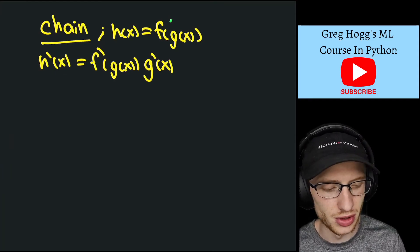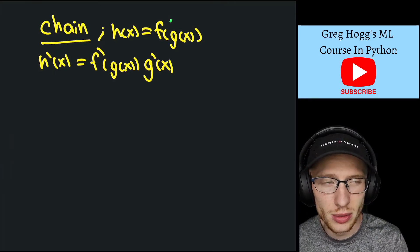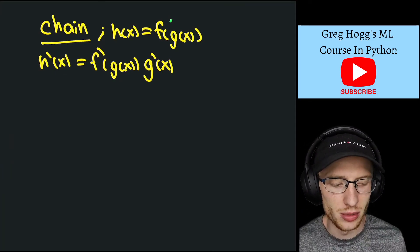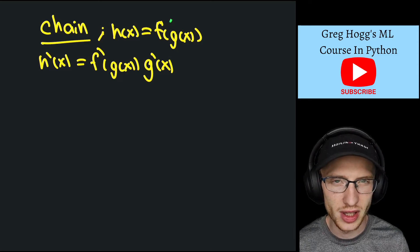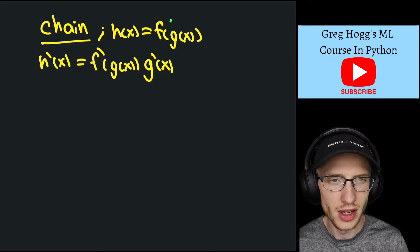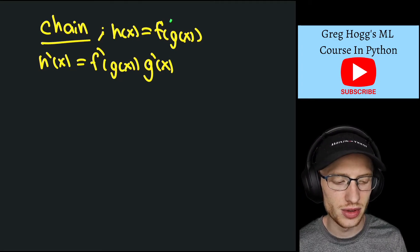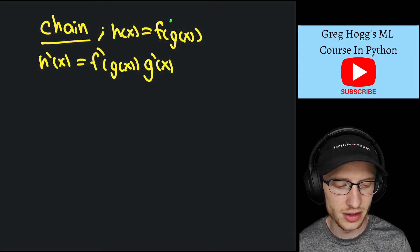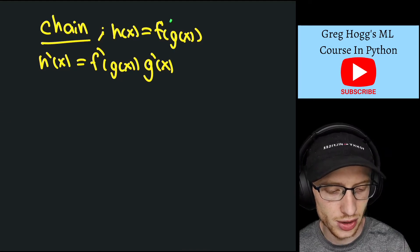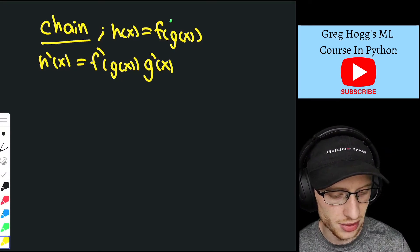Let's talk about the chain rule, so h(x), if it's equal to f(g(x)), meaning we have this function g(x), and we put that into the input for f, so then h'(x) actually is equal to f'(g(x)) times g'(x), let me show you with an example.